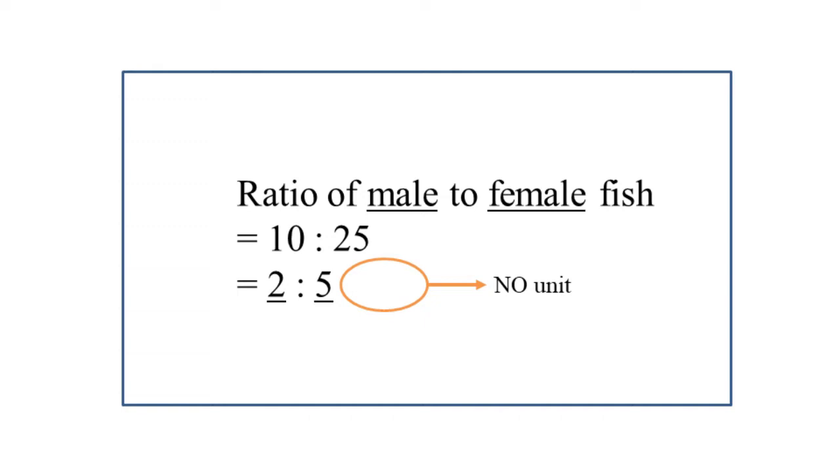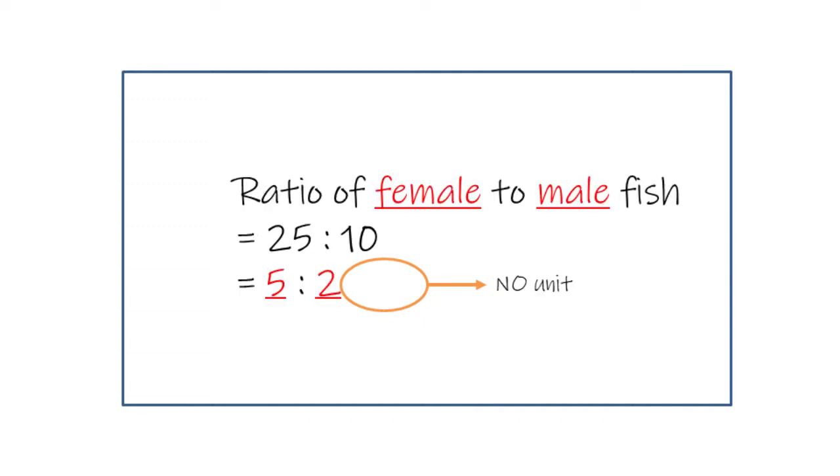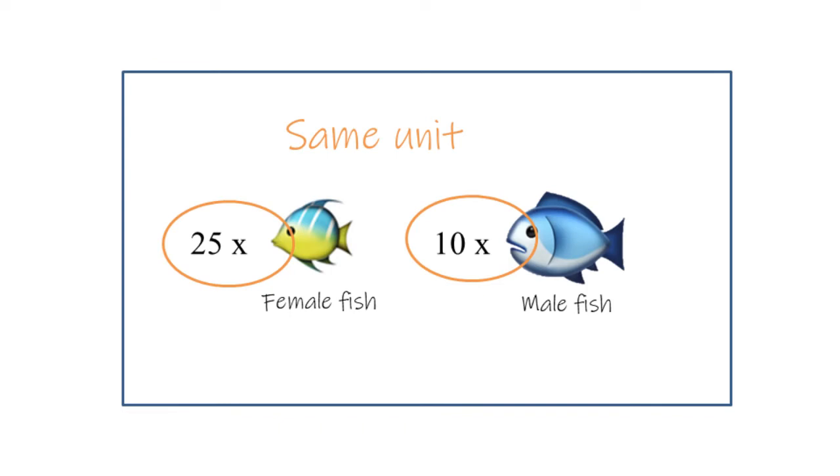The ratio of male fish to female fish is 2 to 5. If we swap the terms and make the ratio 5 to 2, this becomes the ratio of female fish to male fish. Keep in mind that the quantities involved in a ratio should be the same unit at the first place in order to make a ratio.